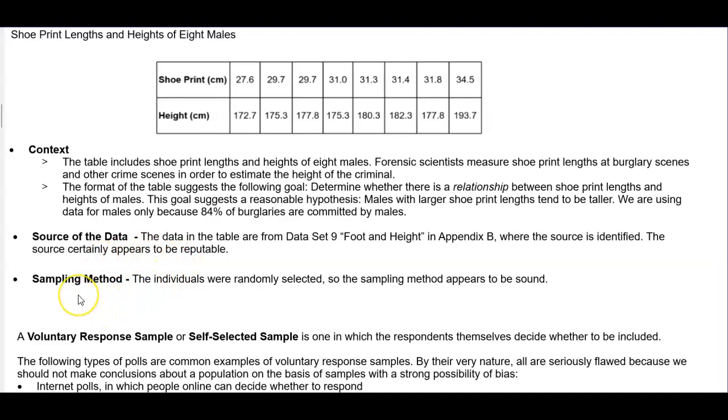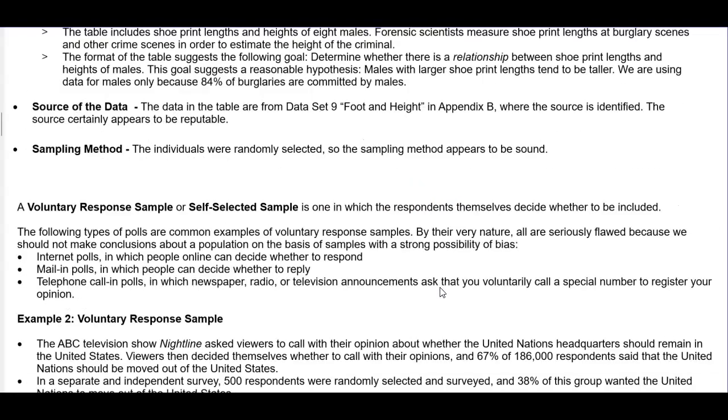We need to find the source of the data. Where did the source of the data come from? This data is in the tables, which are from data set nine, foot and height in appendix B at the end of the textbook, where the source is identified. The source certainly appears to be reputable. Then we want the sampling method. The individuals were randomly selected, and because it was randomly selected, we can say that the sampling method appears to be sound.